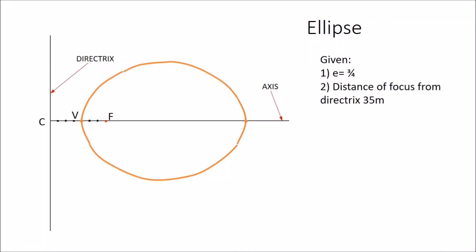Methods to draw tangent and normal at a point on conic curves are similar if they are drawn using the general method. This is an ellipse constructed using the general method, so we know this axis, this directrix of the ellipse, and this focus.